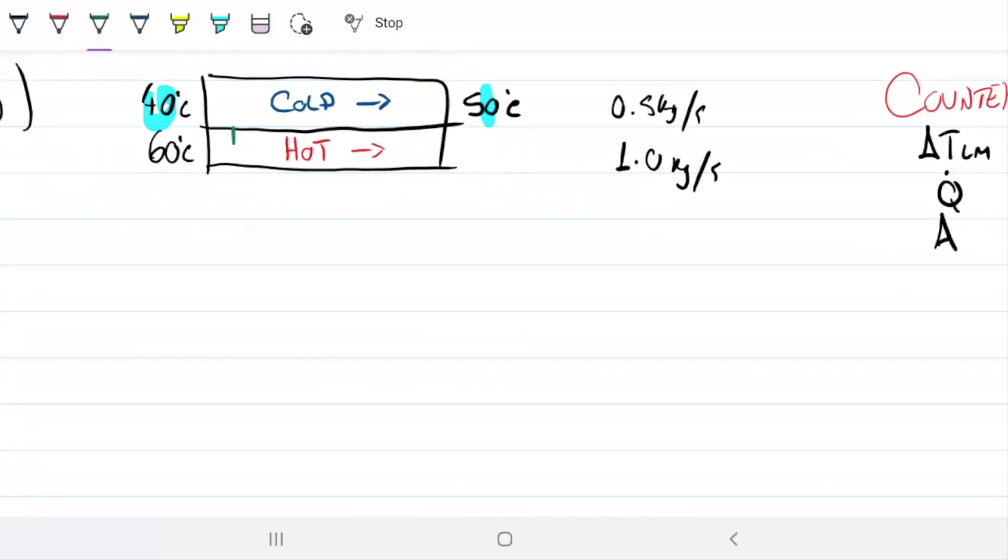Nothing changed in regards to Q. Q is still going from hot to cold, that did not change whatsoever. The amount of energy has to be the same, so the equation is going to be the same: mass of cold, CP of cold, delta T of cold, this is all the same. So therefore, the output of hot has to be the same, so from this we still get that the hot output is still 55°C, that did not change.